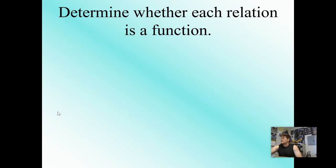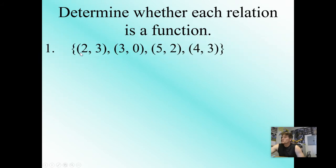Let's look at whether each of these relations is a function. You have (2, 3), (3, 0), (5, 2), (4, 3). Remember, relations are just ordered pairs put together. But to be a function, you have to have different x values. So if I'm looking at this one and I'm thinking of my function machine, I have 2 plugged in, spits out a 3. 3 plugs in, spits out a 0. 5 plugs in, spits out a 2. 4 plugs in, spits out a 3.